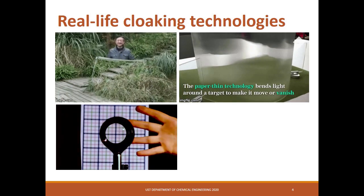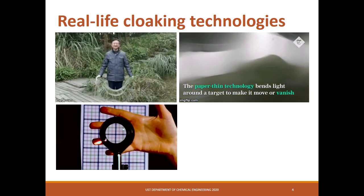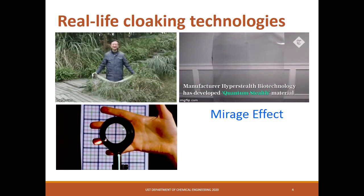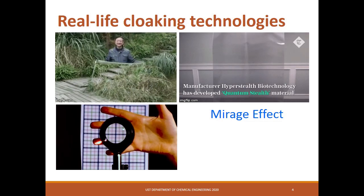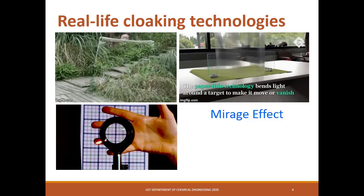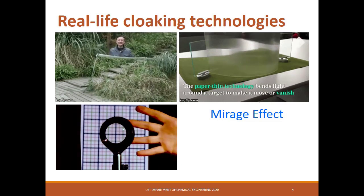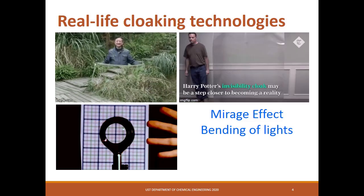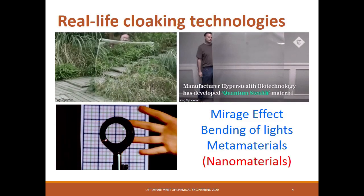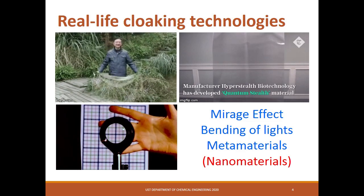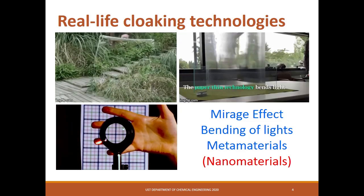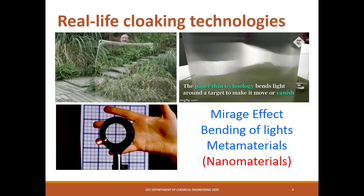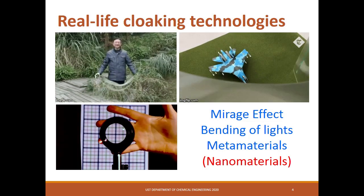So how do we make an object invisible? One method is the mirage effect, or photothermal deflection, similar to the tales of desert wanderers who glimpse a distant oasis only to discover it was only a mirage. Another method is the bending of light, as the researchers from the University of Rochester have made. Hyper-Stealth Biotechnology uses metamaterials to obtain the invisibility effect. Metamaterials are artificially engineered materials that do not occur in nature. The complex structure is composed of micro and nanoscale features.